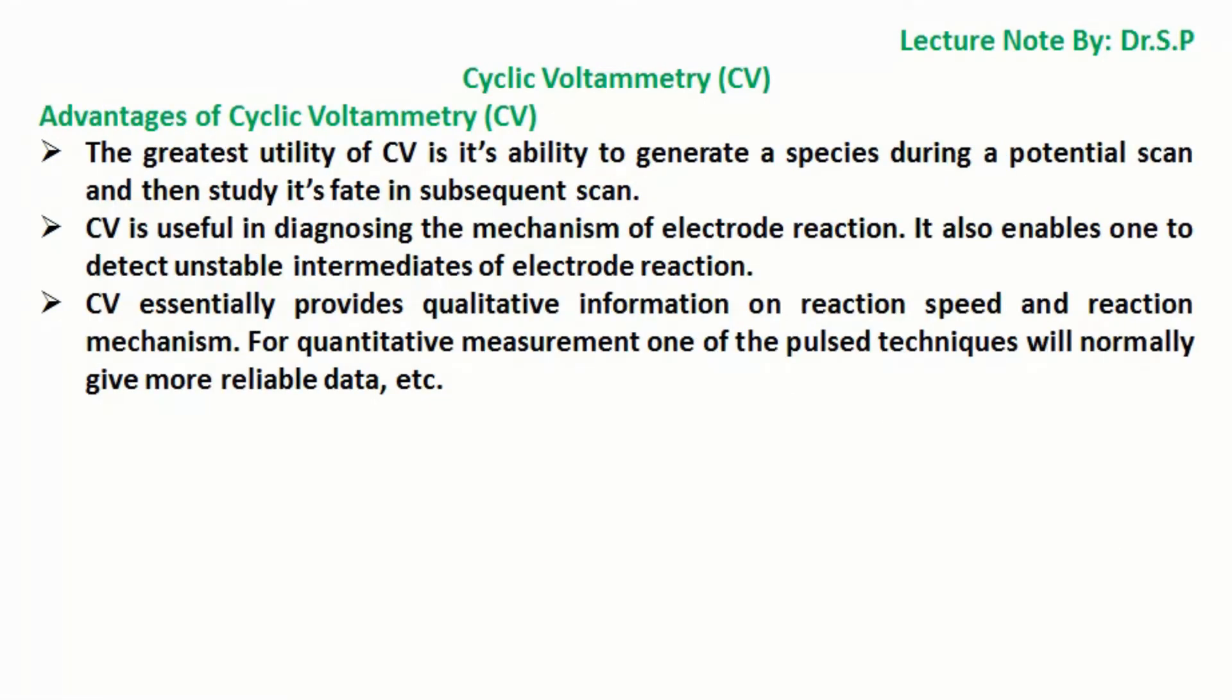Advantages of cyclic voltammetry CV. The greatest utility of CV is its ability to generate a species during a potential scan and then study its fate in a subsequent scan. CV is useful in diagnosing the mechanism of electrode reactions and it enables one to detect unstable intermediates of electrode reactions.